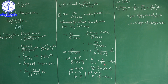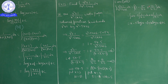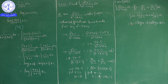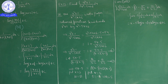Substituting back, ∫(x²+1)/(x²−5x+6) dx = ∫[1 − 5/(x−2) + 10/(x−3)] dx = x − 5 log|x−2| + 10 log|x−3| + C.